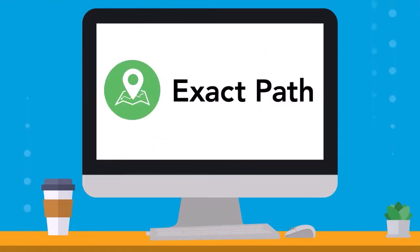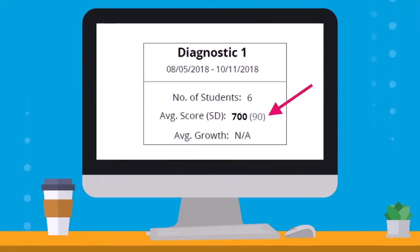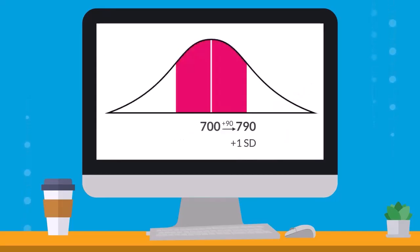On the Diagnostic Reports for ExactPath, standard deviation is reported inside parentheses next to the average score. You can add and subtract this number from the mean to calculate the range of scores within one standard deviation.